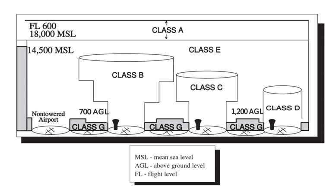On March 12, 1990, ICAO adopted the Current Airspace Classification Scheme. The classes are fundamentally defined in terms of flight rules and interactions between aircraft and air traffic control. Generally speaking, the ICAO airspaces allocate the responsibility for avoiding other aircraft, namely either to ATC or to the aircraft commander.